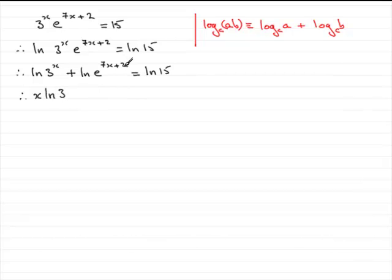Now, with this one, you can do the same if you like. You can bring the 7x plus 2 out to the front, and you would have 7x plus 2 times the natural log of e. But you should know the natural log of e is 1. And some of you might not have even done this and just written 7x plus 2, because if you've got e to a power, it's always the same as just that power.